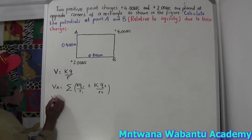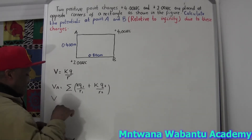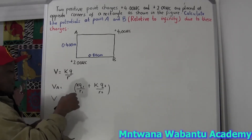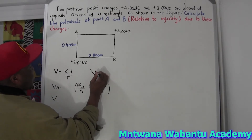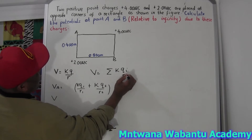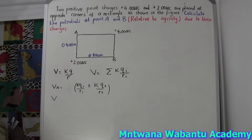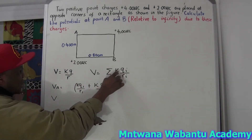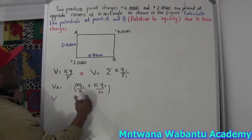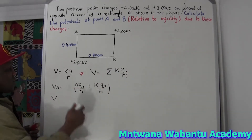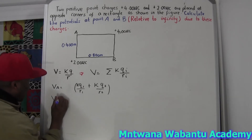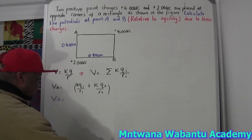Since K is a constant, we can take it outside the brackets and write: V equals K times the summation of all Q over R. This means you sum all the charges over their respective radii — Q1 over R1 plus Q2 over R2. So V_A equals K times (Q1/R1 + Q2/R2).